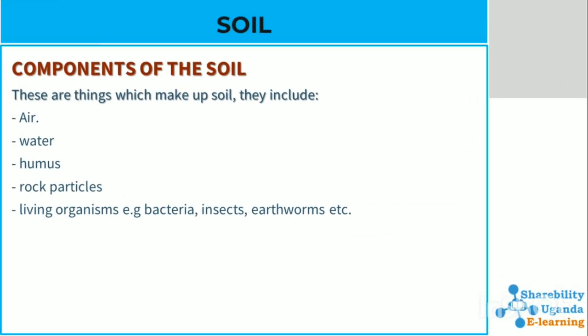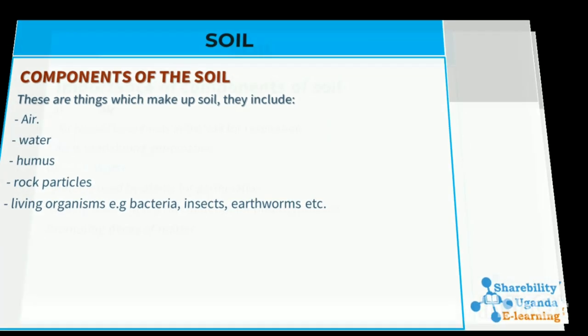Components of the soil — all things that make up the soil. We have air, water, humus, rock particles, and living organisms such as bacteria, insects, earthworms, etc.